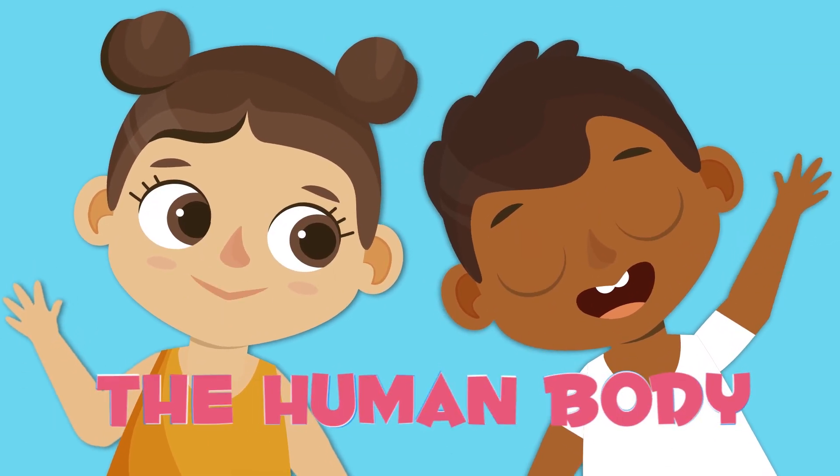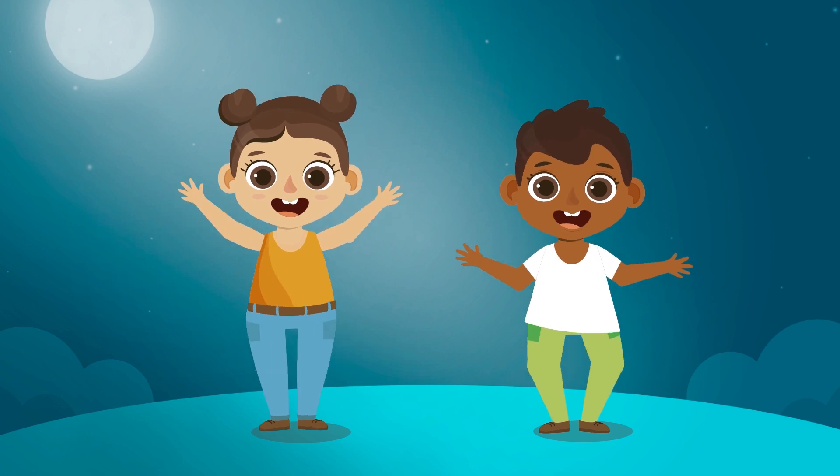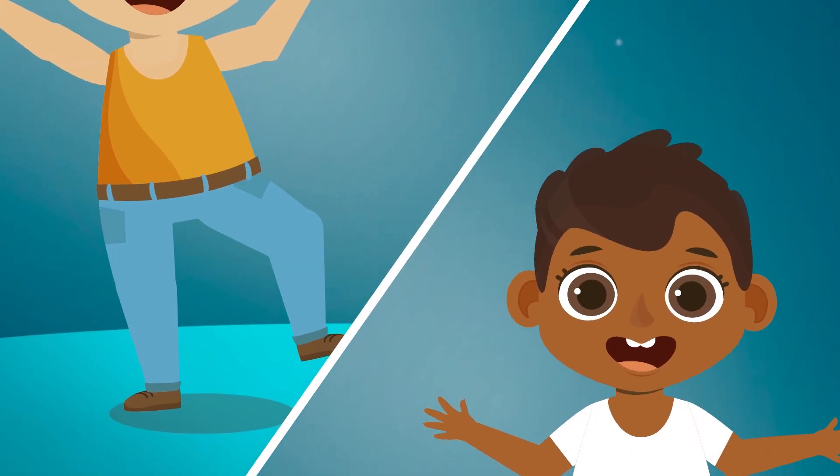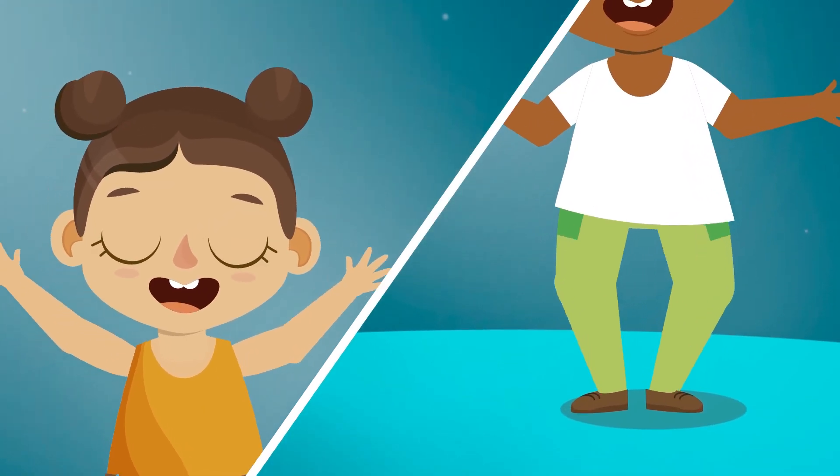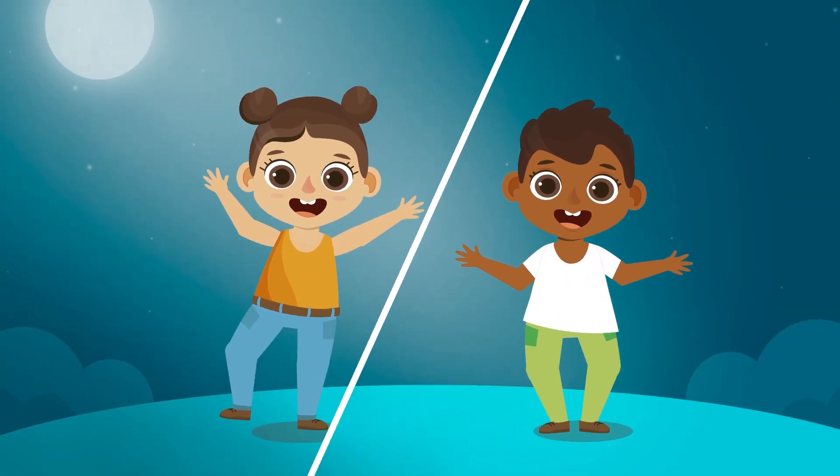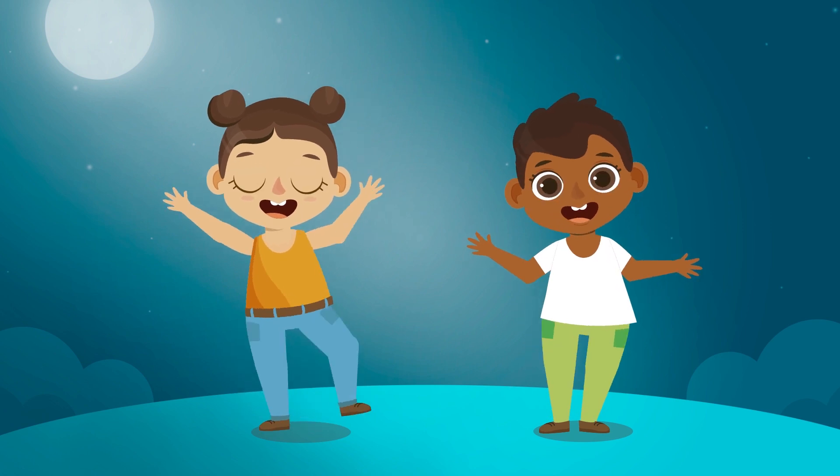The human body is made up of different parts: the head, the trunk, and our upper and lower limbs. It is important to care for the human body by eating well and doing exercise to stay healthy.